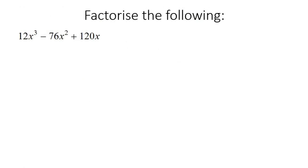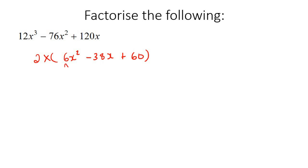So here's our first example. What we can see here is that this is actually not a trinomial right now, because all of these have x's in them. So what we're going to do is we can take out a common factor of x, but there's more that we could do — we could also take out a number. We can take out a 2, and then if you look at these three numbers, you could take out a 2 from each of those. So now that becomes a 4 on the outside, and you're left with 3x squared, take away 19x plus 30.